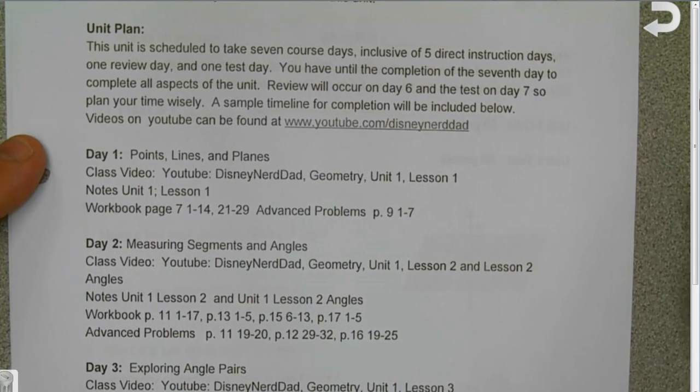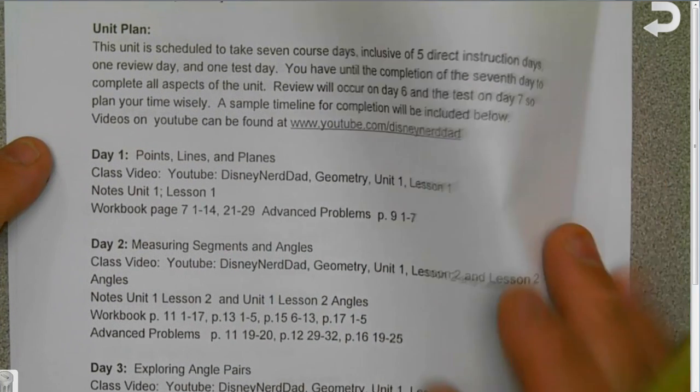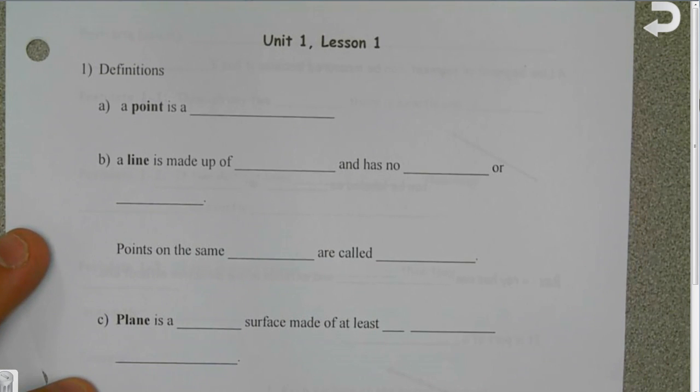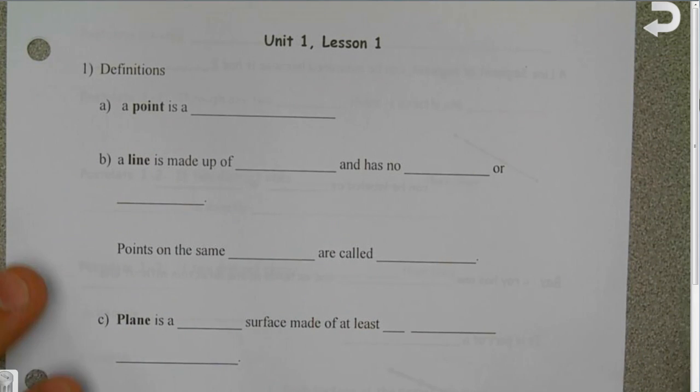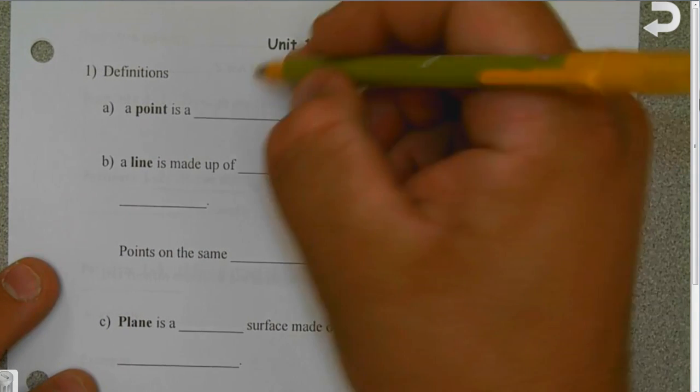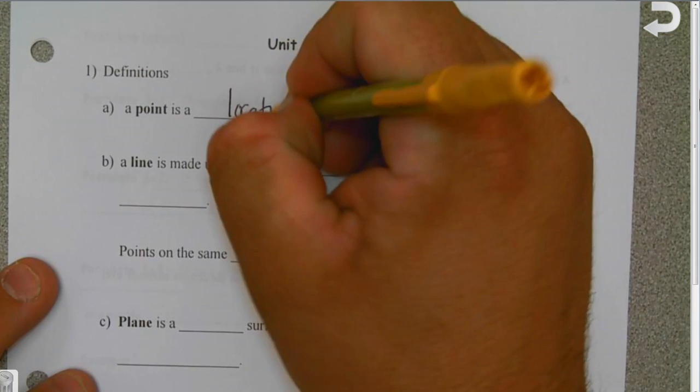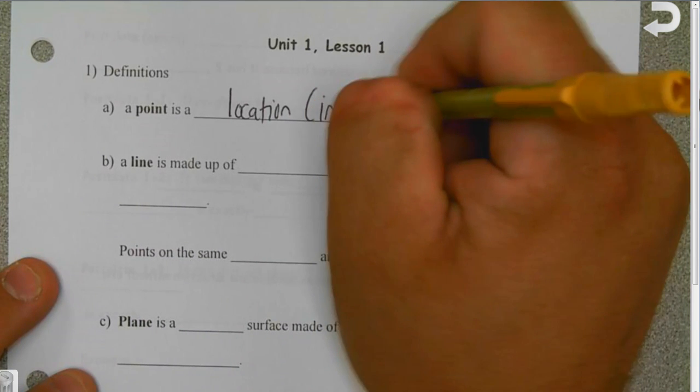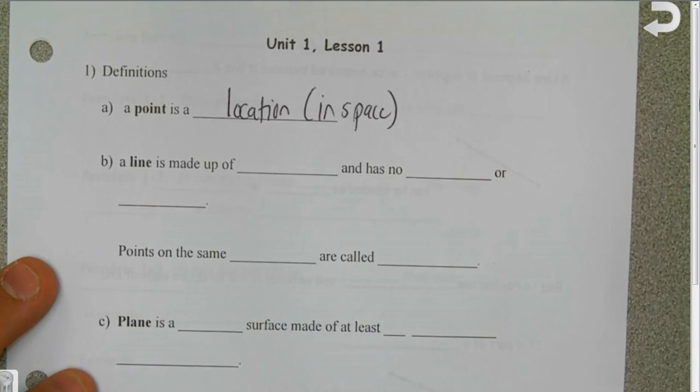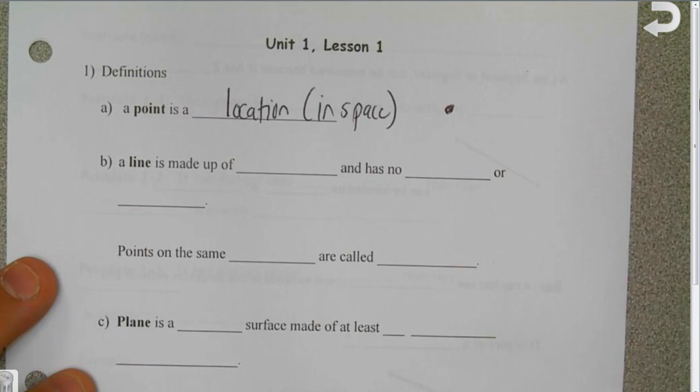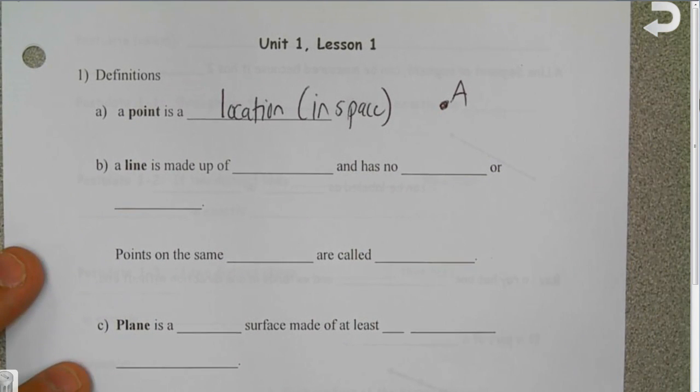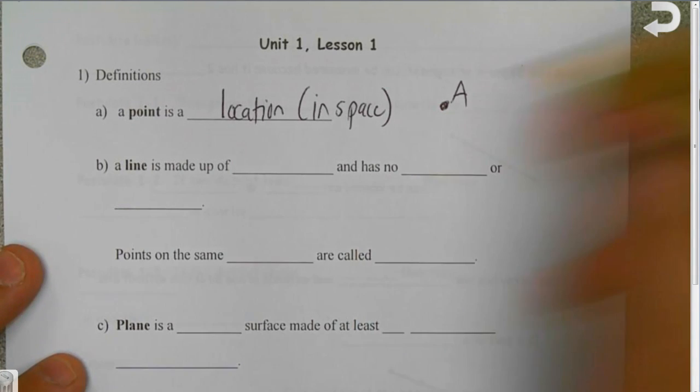The notes we're doing today are Unit 1 Lesson 1. A couple quick things you should know from middle school: a point is a location in space. If I have a point, I want to go ahead and give it a label. That can be a number, a symbol, a sign, anything, but typically I call this point A.